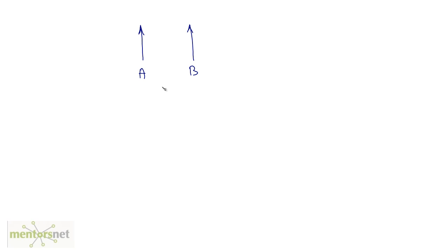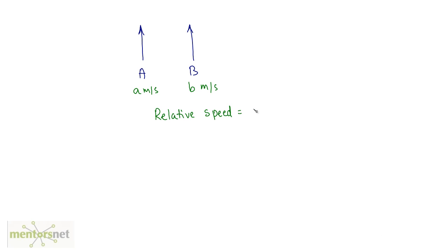So let us take the first situation. These are two objects moving in the same direction. A is moving at a meters per second and B is moving at b meters per second. So what would be the relative velocity? The relative velocity will be a minus b meters per second.